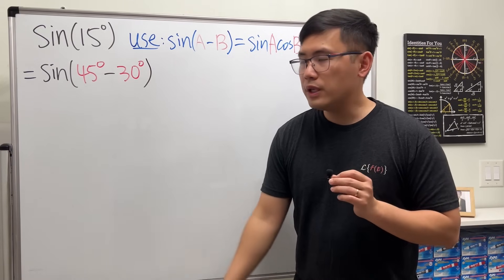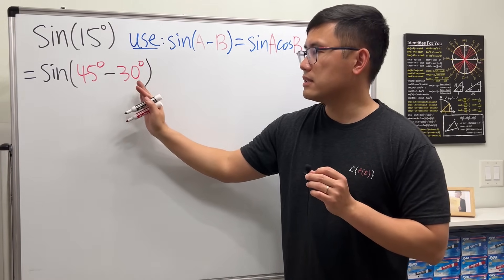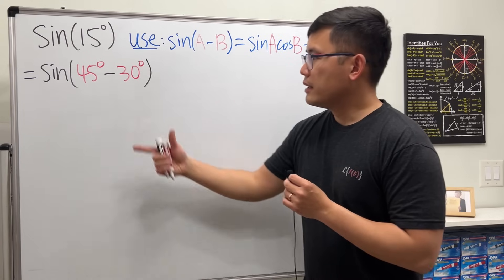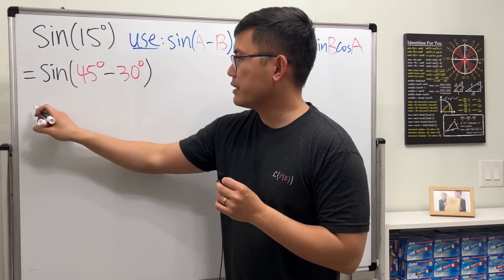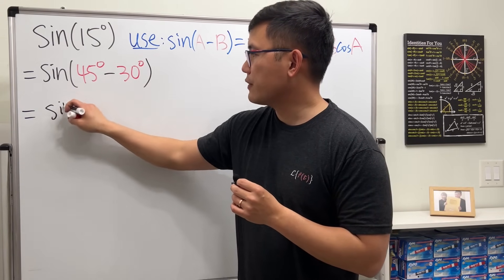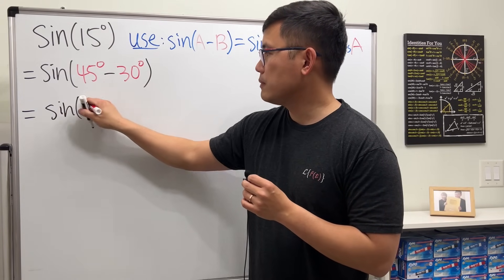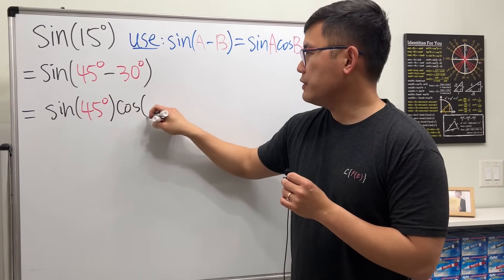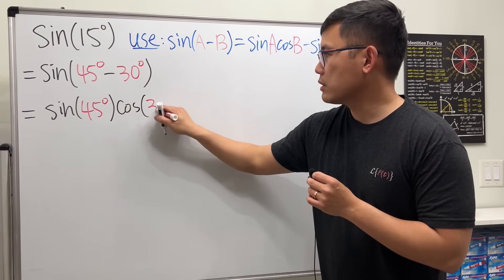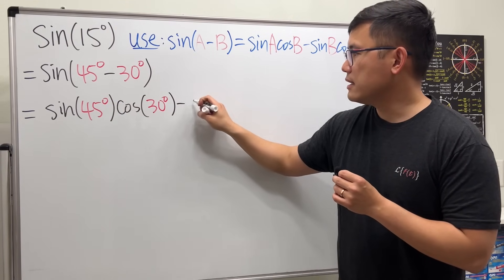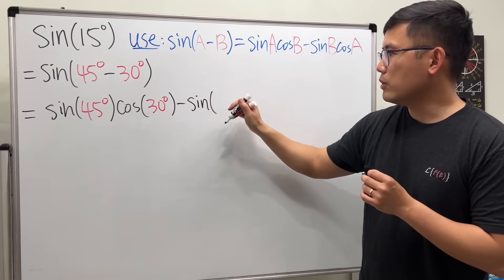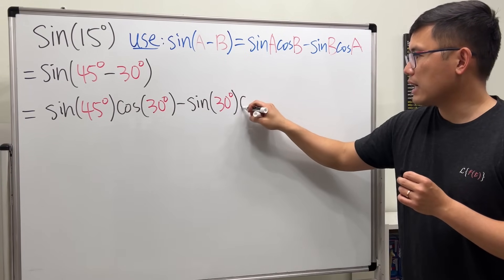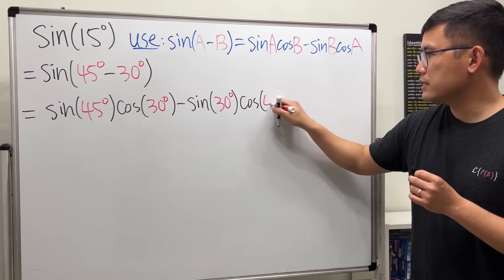If you want to do it with 60 degrees minus 45 degrees, that's fine too. Now using this formula, we can break this apart: we get sine of the first angle times cosine of the second angle, minus sine of the second angle times cosine of the first.